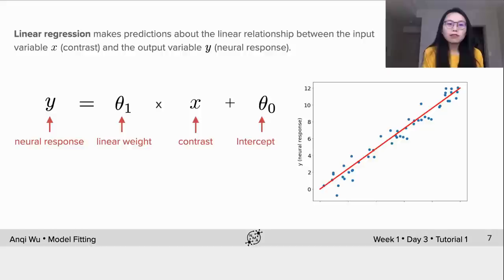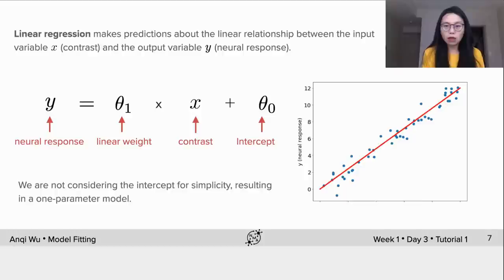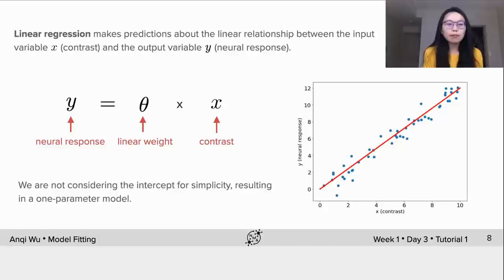For simplicity of the explanation, we will not consider the intercept for now, which results in a one-parameter model like this.